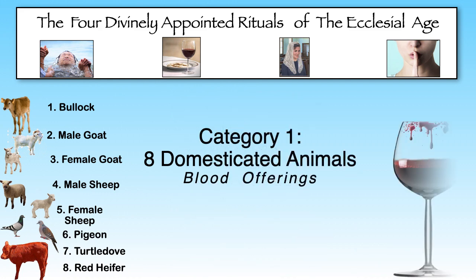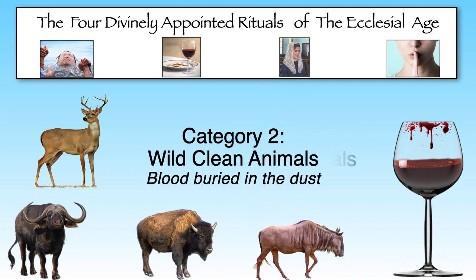We reviewed the first animal category as being those eight sacrificial animals whose blood was exclusively identified with the altar and the tabernacle, with significant consequences for non-compliance in the blood handling and the sacrificial offering. The second category of clean animals, those animals with the parted hooves, cloven hooves, and chewed the cud, but were wild and not domesticated.